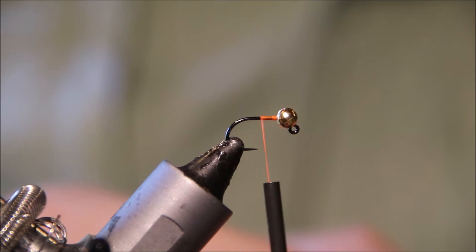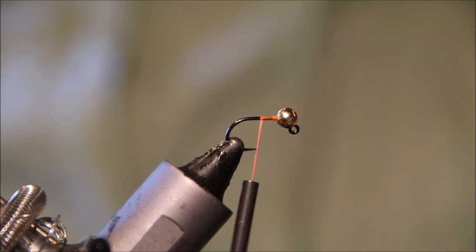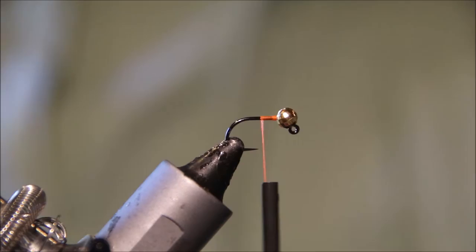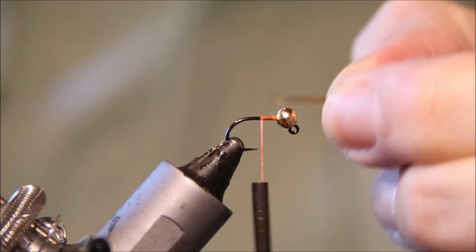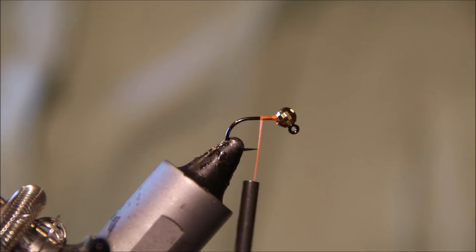I've got a 3.5mm, maybe a 2.8mm or a 3mm, and a 2.5mm. It means you can fish the same pattern in a range of flow speeds and depths, and not have to be worrying about changing patterns.